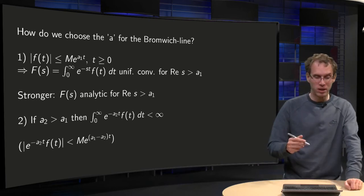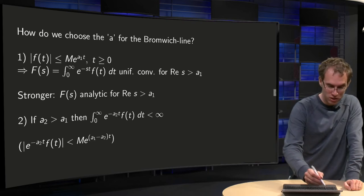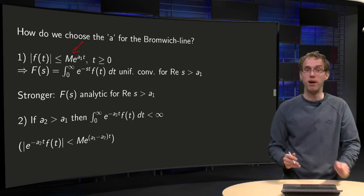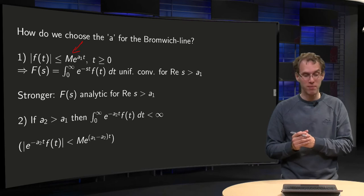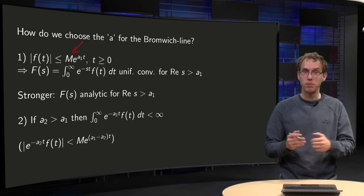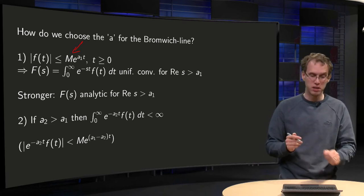Okay, you don't know your f(t), but you know that it is of exponential order, so it is bounded by M times e to the power a₁ times t, where a₁ is some constant and t is positive.